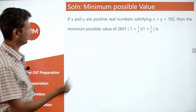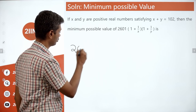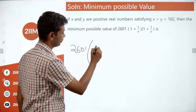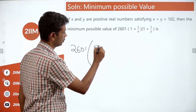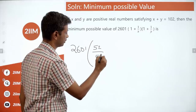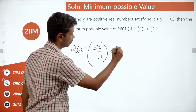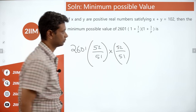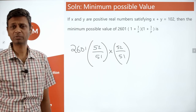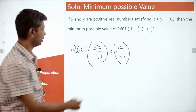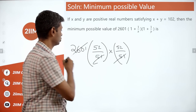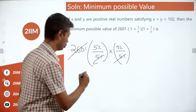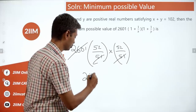With x = y = 51: 2601 × (52/51) × (52/51). Note that 51×51 = 2601, so this equals 52×52 = 2704.